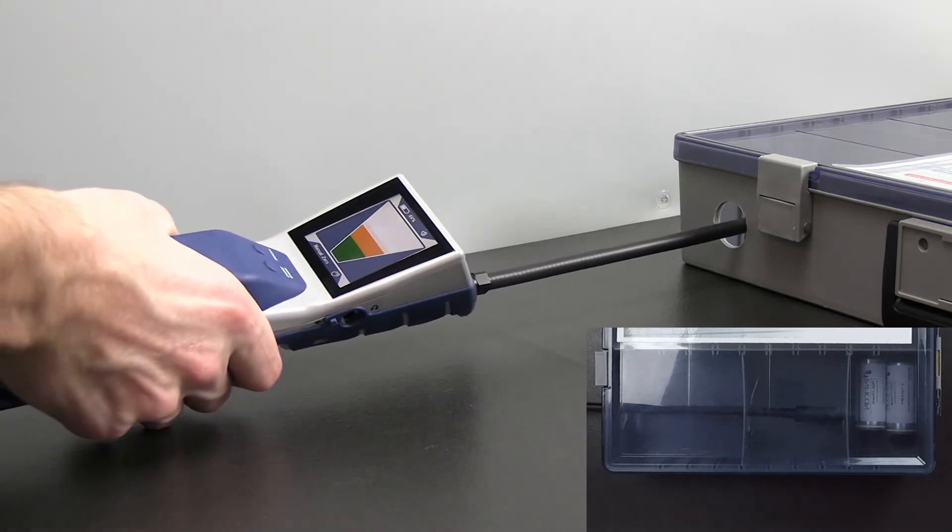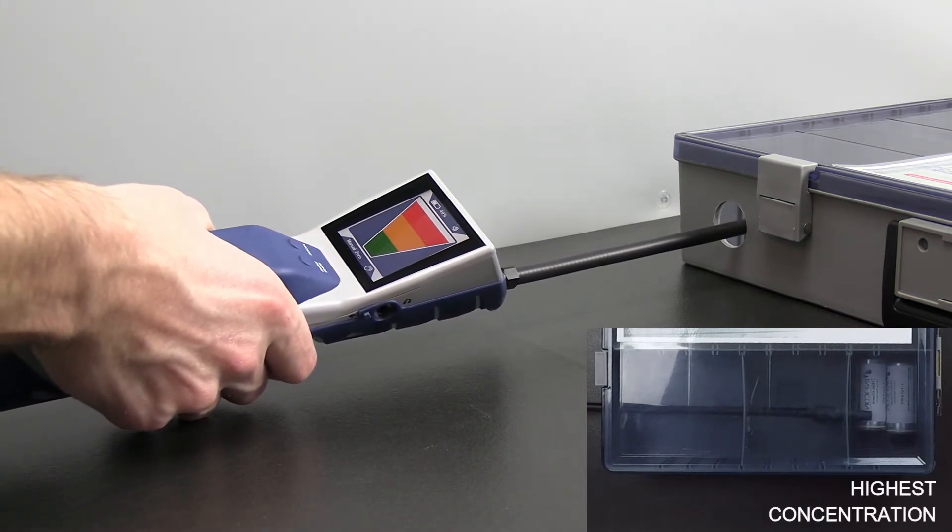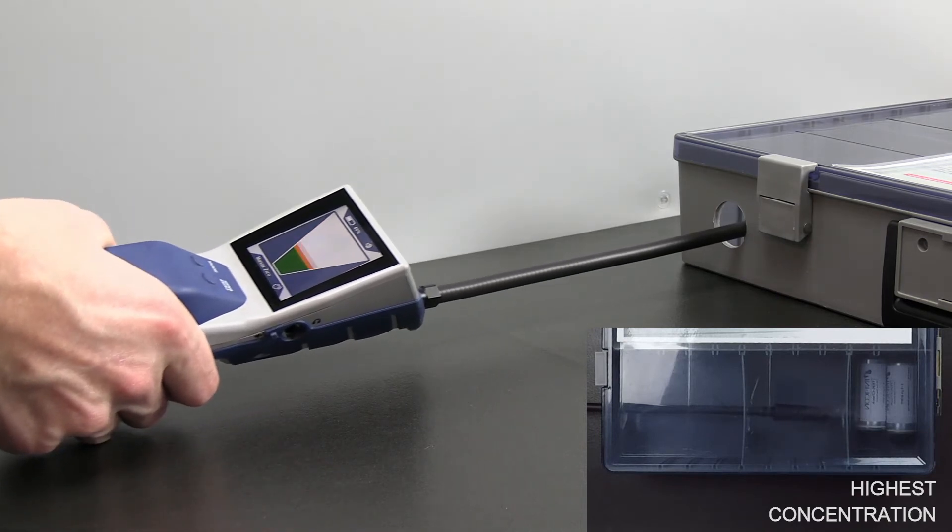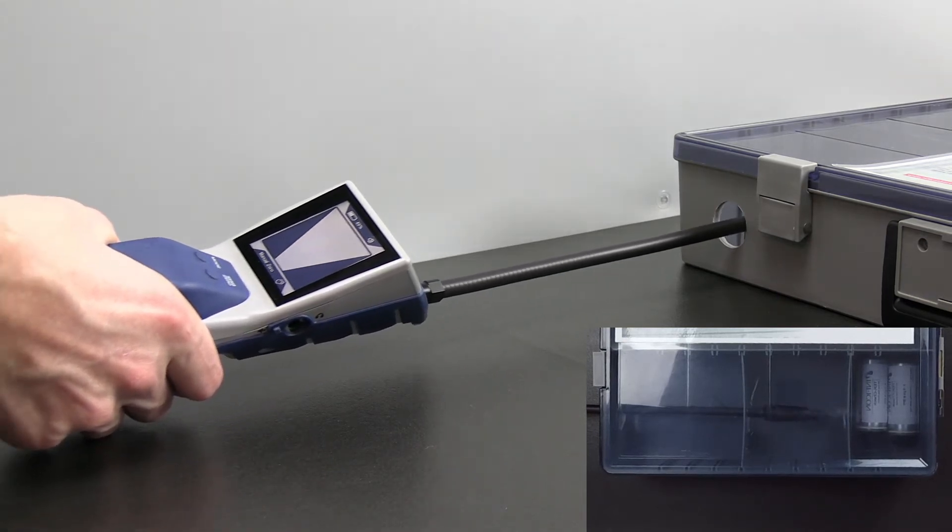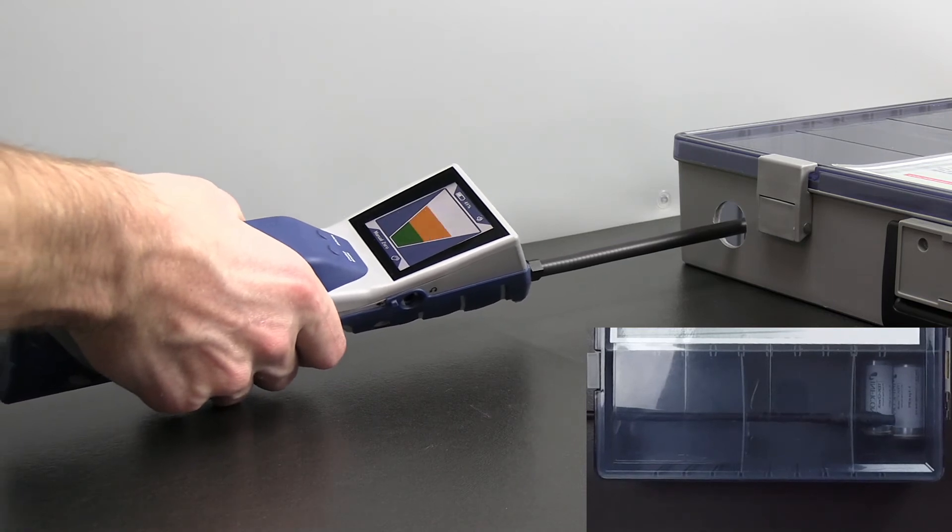While in Manual Zero Mode, the beep rate changes with refrigerant concentration. This allows you to determine if you're moving toward or away from the leak just by listening to a change in beep rate.